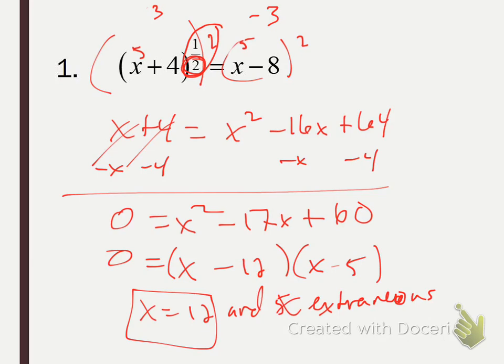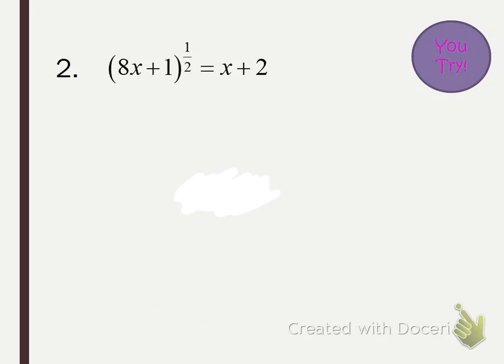Make sure you're checking your work for extraneous solutions. Next one: 8x plus 1 is being raised to the one-half power. In order to eliminate that exponent, we're going to raise both sides to the second power — it really boils down to raising it to the same power as the root. Remember, the root in a fractional exponent is the denominator. These multiply out to 1, giving us 8x plus 1 on the left.